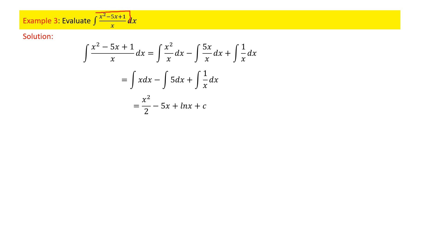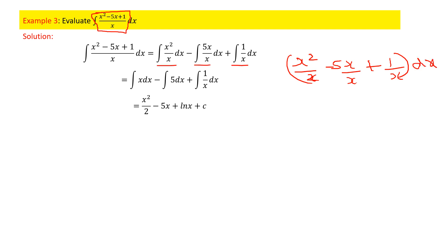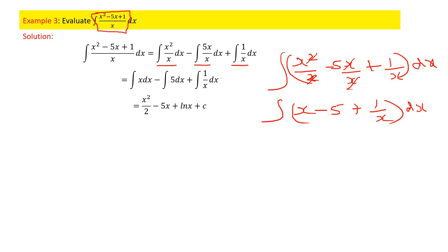Problem 3: Evaluate ∫(x² - 5x + 1)/x dx. Before integrating, split the fraction term by term: ∫x²/x dx - ∫5x/x dx + ∫1/x dx. Cancelling x in each term gives ∫x dx - ∫5 dx + ∫(1/x)dx. Integrating: x²/2 - 5x + ln(x) + C.